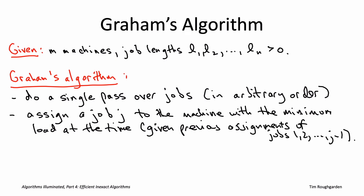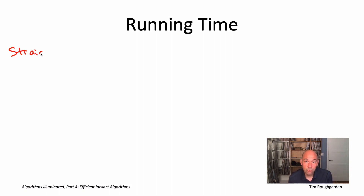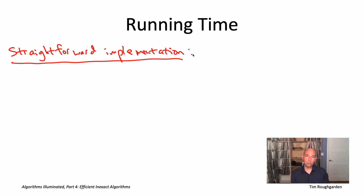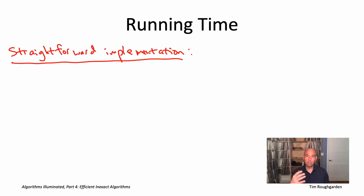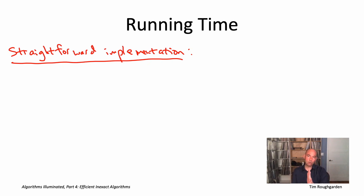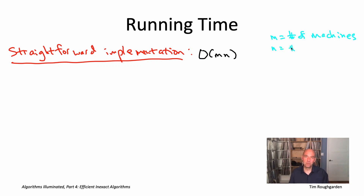It's not difficult to verify that Graham's algorithm is fast. In the most straightforward implementation, there's an outer for loop with n iterations — one per job. Inside each iteration, you find the minimum-load machine via a linear search over the m machines, maintaining a running load count for each machine and incrementing it by the job's length when assigned. Overall, this gives an O(m × n) algorithm, where m is the number of machines and n is the number of jobs.